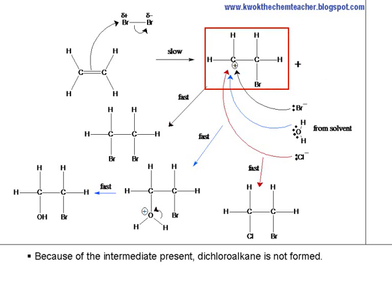Because of the intermediate present, dichloroalkane is not formed at all.